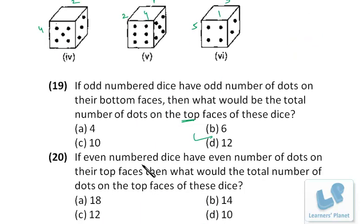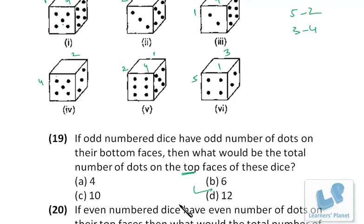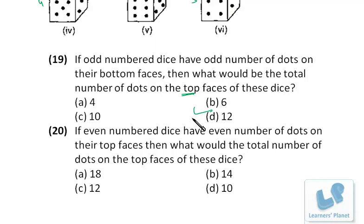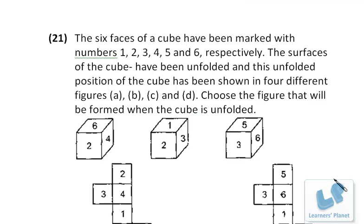If even-numbered dice have even number of dots on their top faces, what is the total? For each even-numbered die we're left with 1 and 6 — even at top means 6. So 6 × 3 = 18.